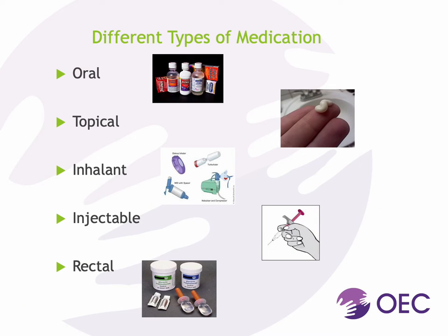There are many different types of medication. The first type are those that are taken orally or by mouth. These are the most common and are generally in the form of a capsule, tablet, or liquid. Next, we have topical medications, which are applied directly to the skin or mucous membrane. These are generally in the form of a lotion, ointment, cream, drops, or patch.